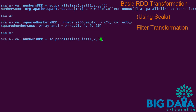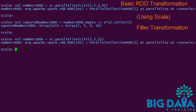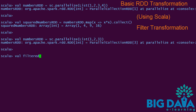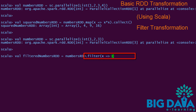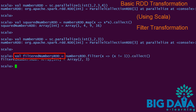Here is the example for filter transformation. The numbers RDD is created with values 1 to 3. We apply filter transformation to it, passing a function to filter out all 1s. The resultant RDD contains all elements that pass the filter condition. Filtered numbers RDD contains values 2 and 3 as expected.